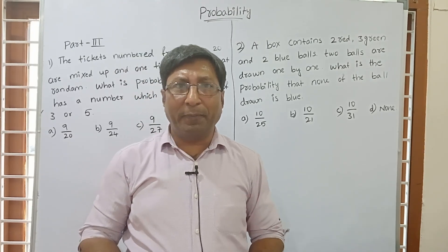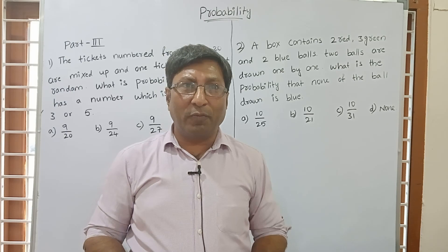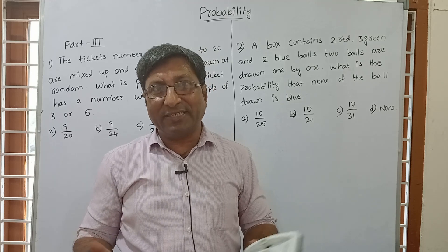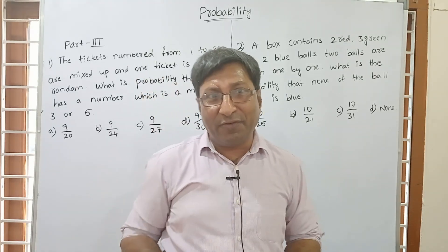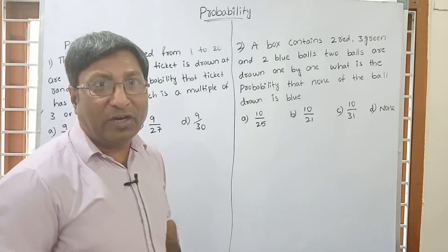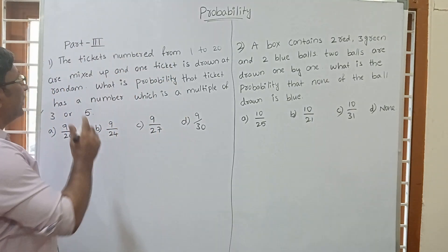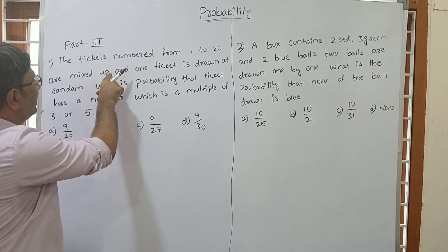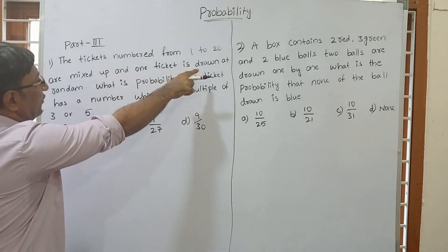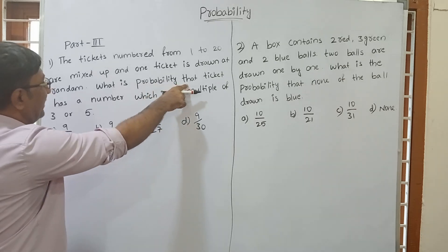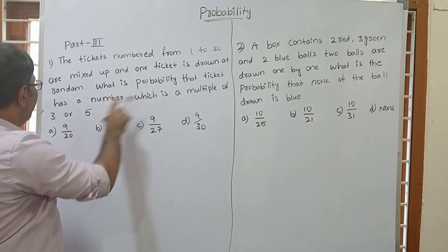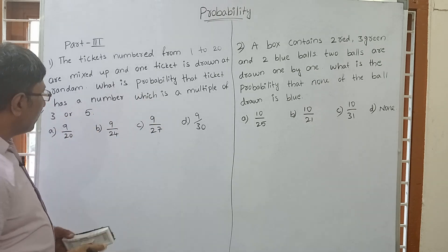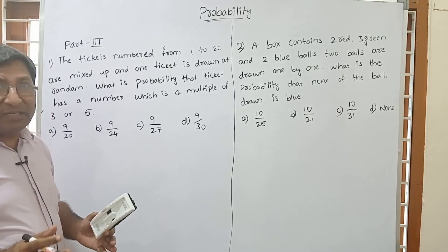Today we are going to study about probability part 3. In probability part 2 we already covered the 2-dice cases and cards. Now in part 3 we are doing miscellaneous types of questions which are very important. The first question is: ticket numbers from 1 to 20 are mixed up and 1 ticket is drawn at random. What is the probability that the ticket has a number which is a multiple of 3 or 5?